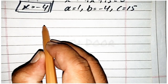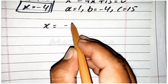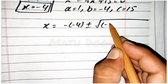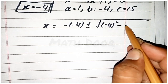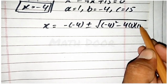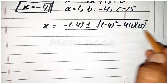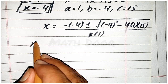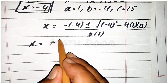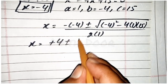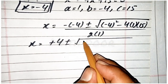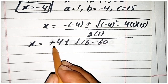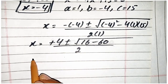Now we apply the quadratic formula: x equals minus b, which is minus into minus 4, plus minus square root of b squared minus 4ac, over 2a. This becomes positive 4 plus minus the square root of 16 minus 60, over 2.